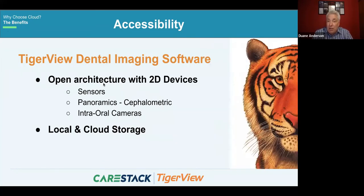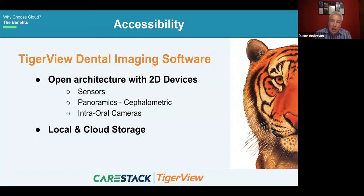With TigerView, accessibility also encompasses an open architecture design supporting capture from all 2D devices — sensors, panoramic, cephalometric devices, intraoral cameras — receiving images from multiple manufacturers and multiple devices within a practice even on the same computer. TigerView also offers both local and cloud storage: images are captured to a local shared folder on your network and automatically uploaded to the cloud, giving you the best of both worlds.